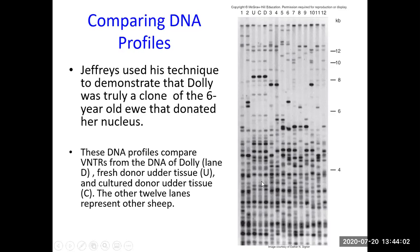DNA profiling uses gel electrophoresis — these are the bands you see on a gel, which can be DNA gels or protein gels. This technique was used to demonstrate that Dolly the sheep was truly a clone of a six-year-old ancestral sheep from which the nucleus had been extracted. Lane D shows DNA from Dolly, while lanes U and C show the fresh and cultured donor udder tissue respectively.